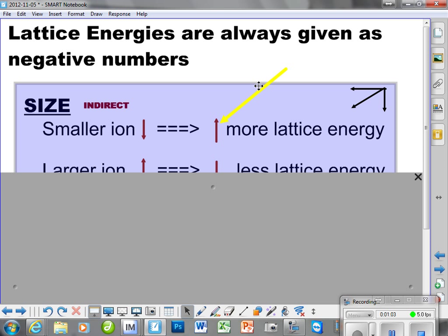As we have a smaller ion, we have actually more lattice energy. And when we talk about a larger ion, we're talking about having less lattice energy. That's why we call these an indirect relationship. When one arrow goes down, the other arrow goes up.